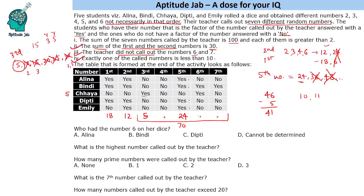Six and seven were not called out — that condition is now satisfied since five is already inserted and no other number is less than ten. We need three more numbers that sum to 41. Also, 18 is not divisible by four, so Emily must have had the number four on her dice. We are left with dice numbers two, three, and six. Looking at the fourth number, all answers are 'no', meaning it could be a prime number or one not divisible by any of the dice numbers.